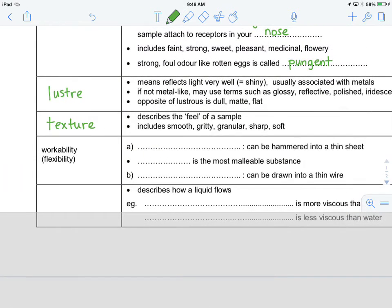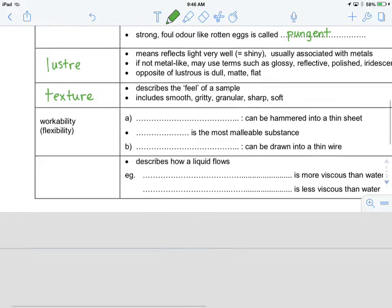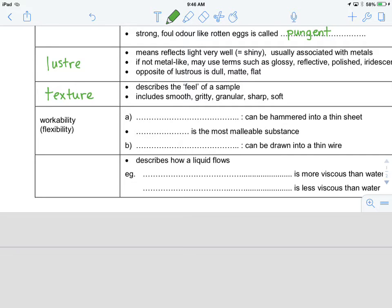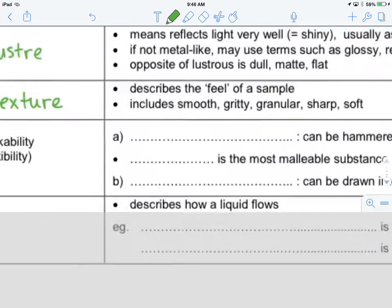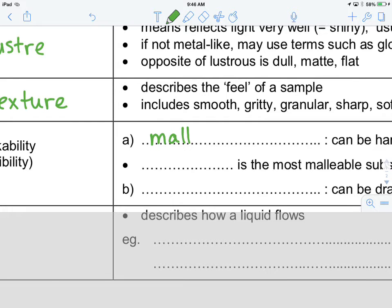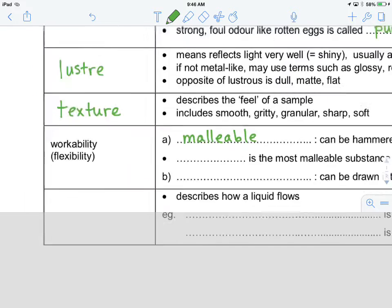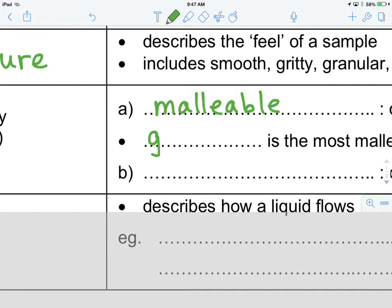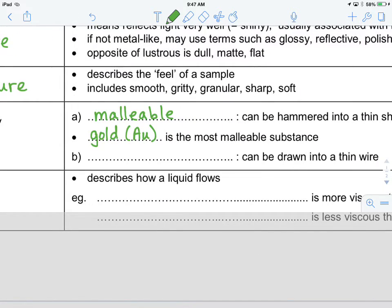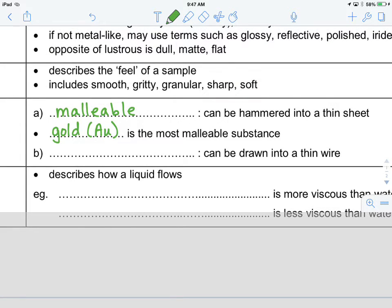And so we have different textures. Think about sandpaper as an example of something that is very gritty, and we could also talk about the texture of something being very smooth. So workability is another one of these physical properties that really comes down to talking about metals. And workability, there are two things, A and B. The first is what is known as malleable. And malleable means that something can be hammered into a thin sheet. The substance gold, which has the chemical formula AU, is the most malleable substance. So it's easiest of all the metals to be hammered into a thin sheet.